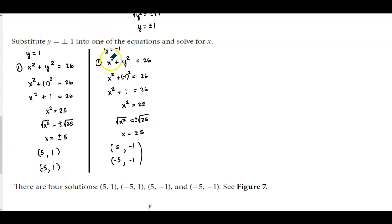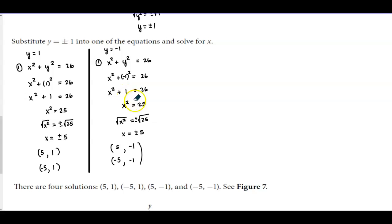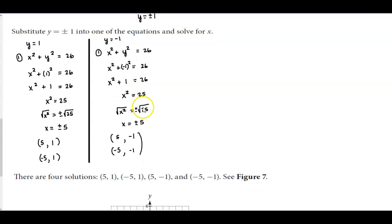Now we substitute y = −1 into equation 1. When we plug in −1 for y and square it, we get positive 1. Subtracting 1 from both sides gives 26 − 1 = 25, and taking the square root gives x = ±5.